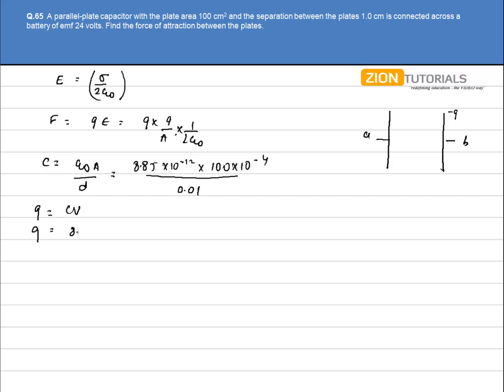That can be 8.85 × 10⁻¹² × 100 × 10⁻⁴ × 24 by 0.01. This is my charge present on the capacitor plates. I have the charge, I know the area of the plate, so I can calculate the force.